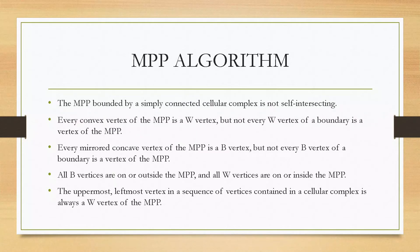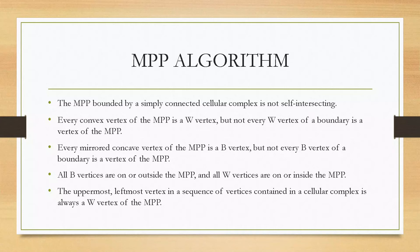Let us see the main steps involved in the MPP algorithm. The MPP bounded by a simply connected cellular complex is not self-intersecting. Every convex vertex of the minimum perimeter polygon is a W vertex, but not every W vertex of a boundary is a vertex of the MPP. Every mirror concave vertex of the MPP is a B vertex, but not every B vertex of a boundary is a vertex of the MPP. All B vertices are on or outside the MPP, and all W vertices are on or inside the MPP. The uppermost or leftmost vertex in the sequence of vertices contained in a cellular complex is always a W vertex of the MPP.